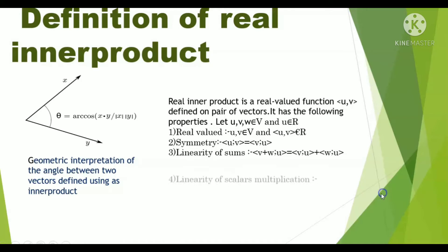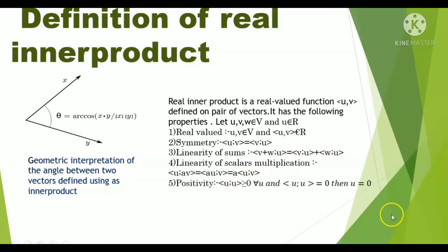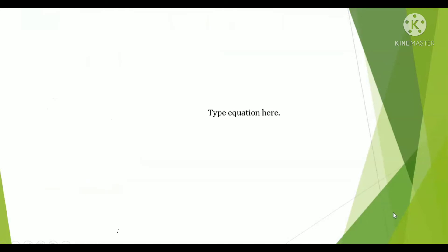Property four: linearity of scalar multiplication — inner product of u, av equals a times inner product of u, v. Property five: positivity — inner product of u, u is greater than or equal to zero for all u, and inner product of u, u equals zero implies u equals zero. So there are five key properties of inner product spaces: linearity, symmetry, and positivity.